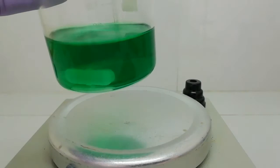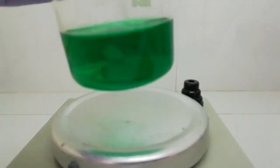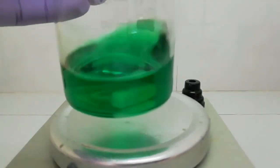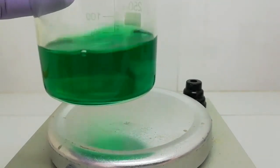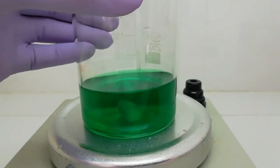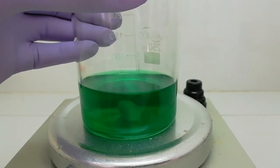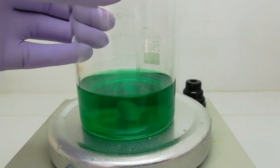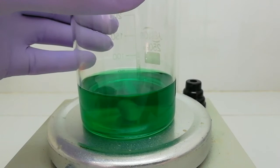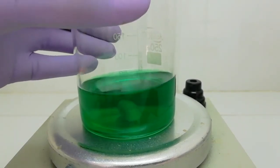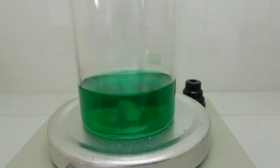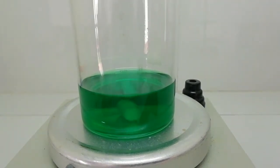After the filtration, this is the nickel chloride solution. This solution contains an extra amount of hydrochloric acid, so we need to evaporate this hydrochloric acid as well as reduce the volume. Then we can get the nickel chloride crystals. So now I am going to heat this reaction and evaporate all hydrogen chloride gas in this solution and reduce the volume.